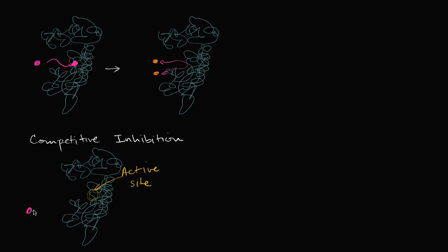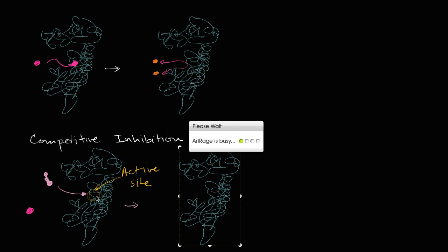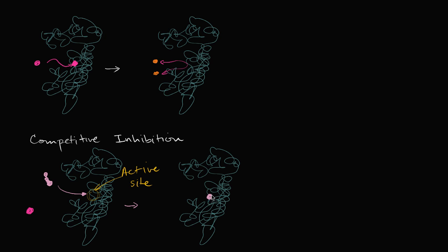If the intended substrate gets to it, we're going to have the first scenario. But in classic competitive inhibition, you could have another molecule that can compete for the active site. And if it gets to the active site first, then we have our enzyme with the other molecule — not the intended substrate — binding to the active site first. Now the intended substrate isn't able to bind, and the reaction isn't going to happen. You can see very clearly that they are competing for the enzyme, and in this case they're competing for the active site.